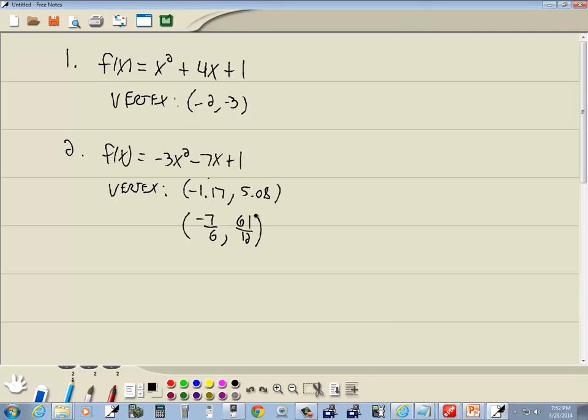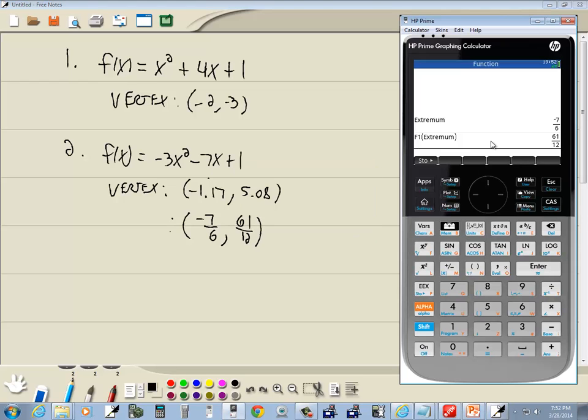I have no memory, but I assume that's what the answer was before. That makes sense, 5.08. So anyway, that's our vertex. That's how to find a vertex on HP Prime graphing calculator. Thank you.